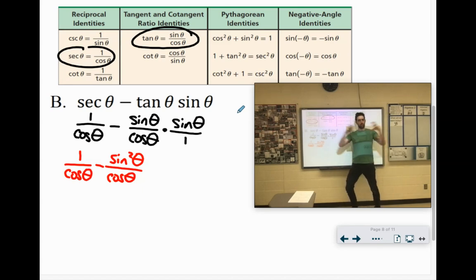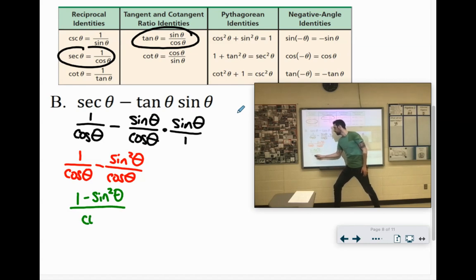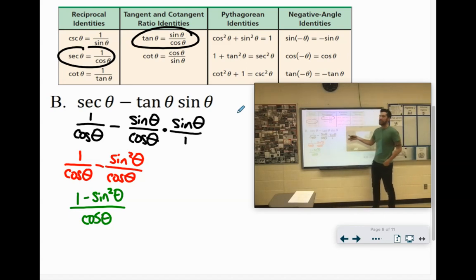And then if you look at your properties here, 1 minus sine squared theta could be derived from this one. Cosine squared. If you just moved the sine squared theta to the other side, you'd have to subtract it. So cosine squared theta is equal to 1 minus sine squared theta.